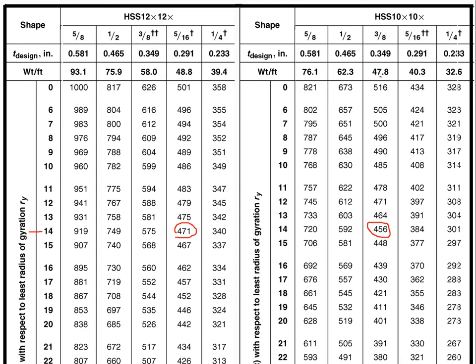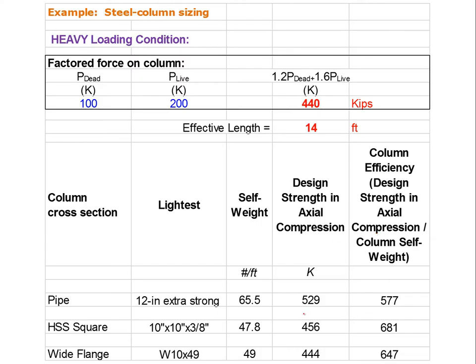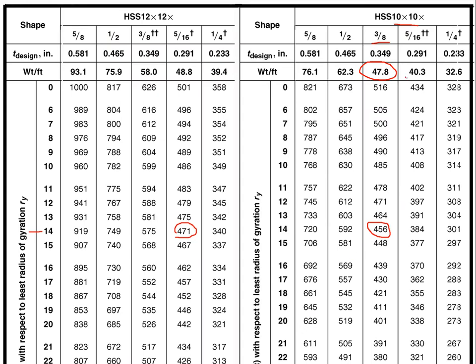We find weights of 48.8 and 47.8 pounds per foot for candidate sections. If we went to an 8-by-8, anything that works there is heavier. So we go with the lightest option, which is an HSS 10-by-10 with a 3/8-inch wall. It weighs 47.8 pounds per foot and has a design axial strength in compression of 456 kips.